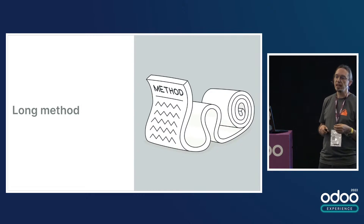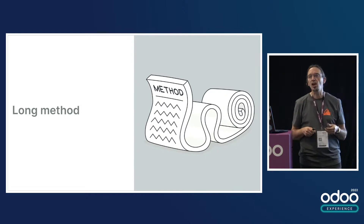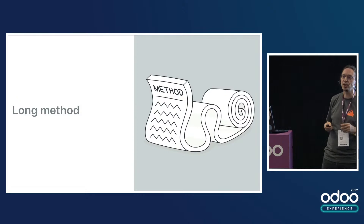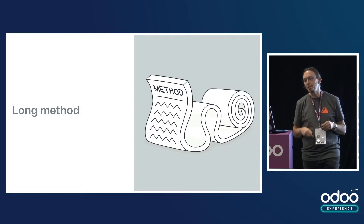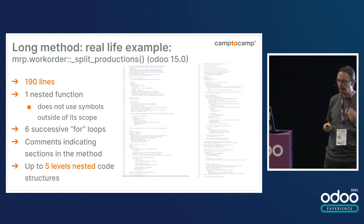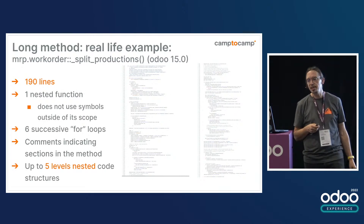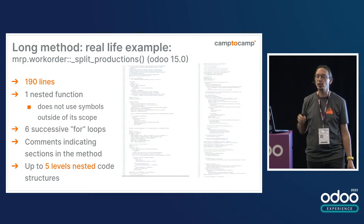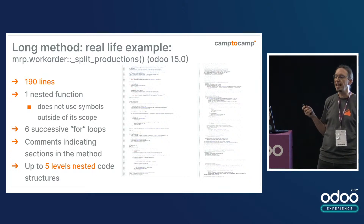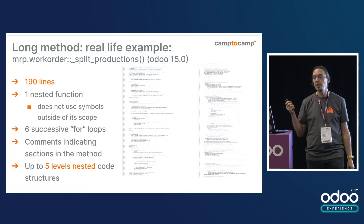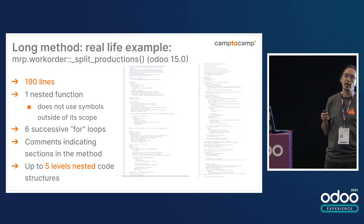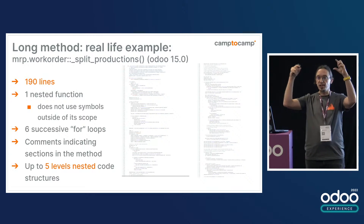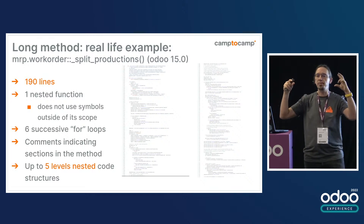Another anti-pattern I see often — too often — is long method. Long depends on your personal taste; I won't speak about the length of code lines here, I know that's a huge debate. But an example I've seen is the split productions method, which is in Odoo MRP. This one comes from Odoo 15 — I checked this morning, it's been refactored a bit since 2016. That method is 190 lines long. It has one nested function and six successive for loops, and these are obvious split points for such a method.